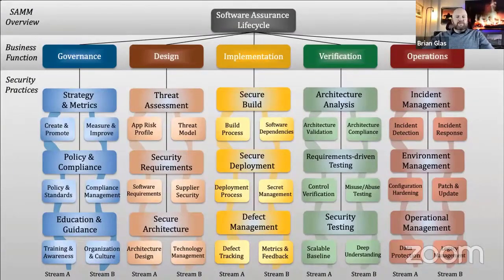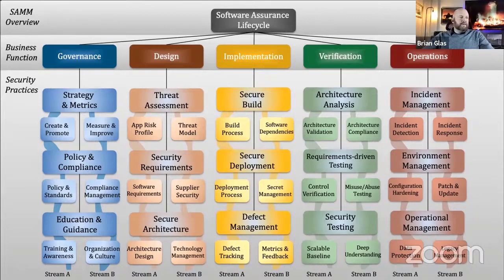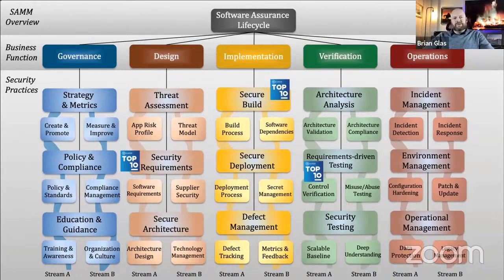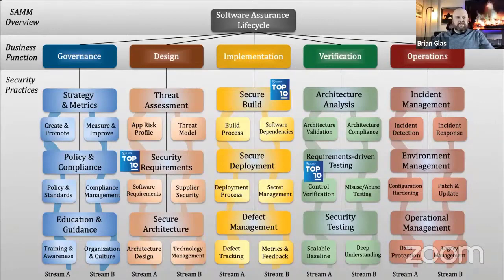One other thing I want to show is where the Top 10 fits in the broader picture. Another project I work on is SAMM — the Software Assurance Maturity Model. This is an exploded graphic of SAMM version 2.0 showing all business functions, security practices, associated streams, and activities. The Top 10 traditionally is used as the basis to start security requirements — ASVS gives you a lot more detail, but sometimes people start with the Top 10 because it's easily consumable and relatively simple by comparison.